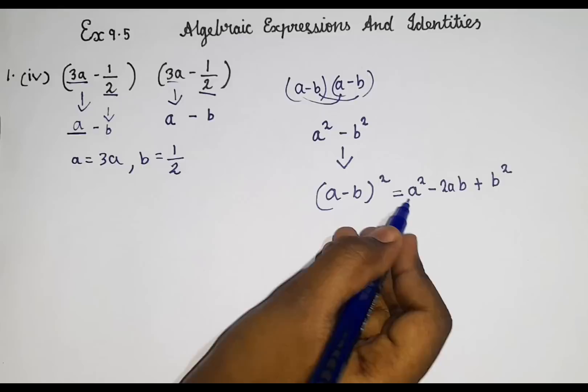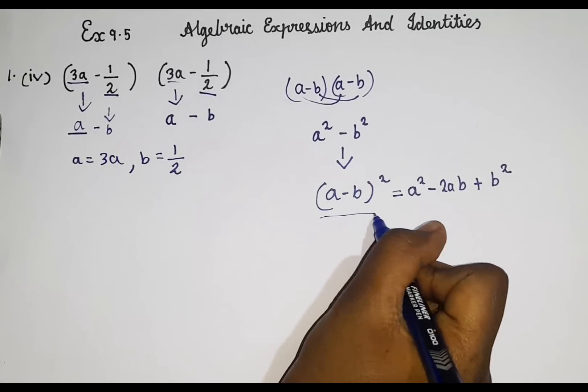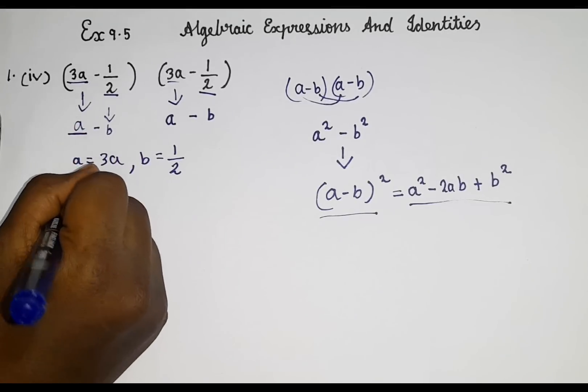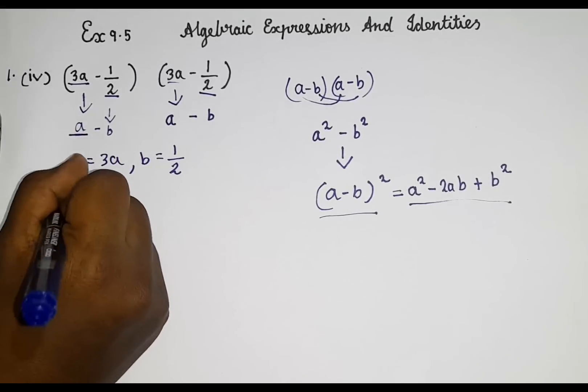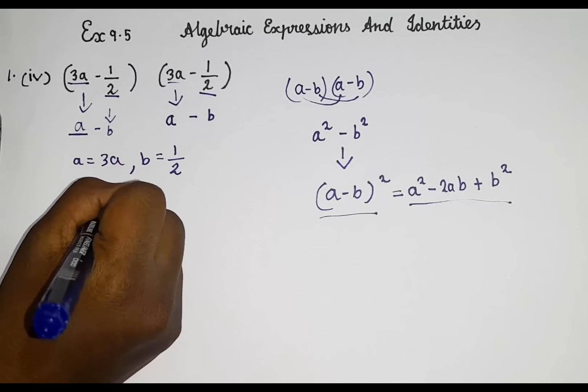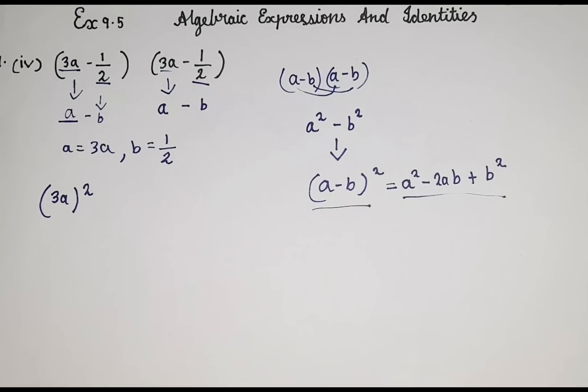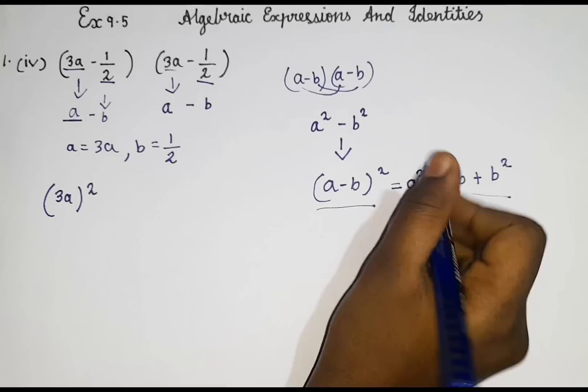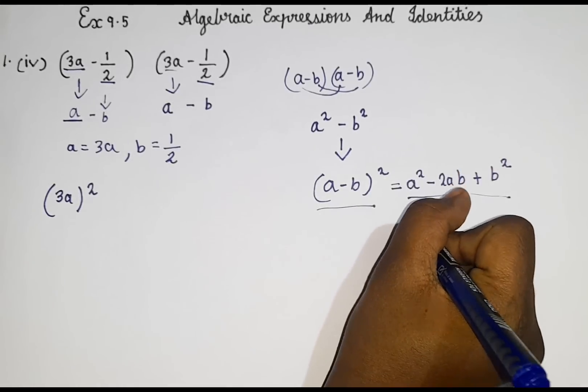So now a square. So the question is in this format. So we will write it in this RHS format. So a square. A square means like this, the whole square. You guys might be wondering why I wrote the whole square. But in the formula it is square. So here it is only one, like only one variable.